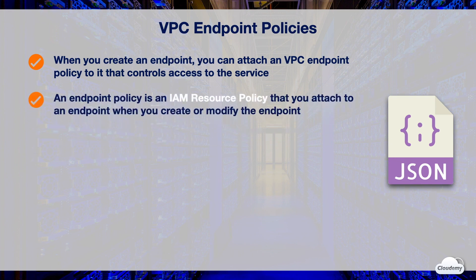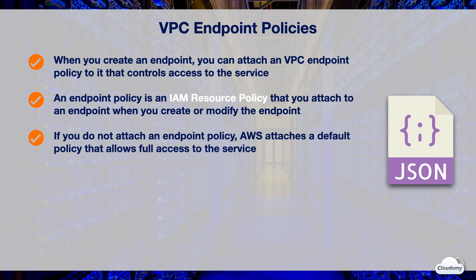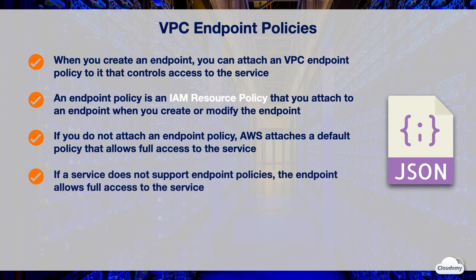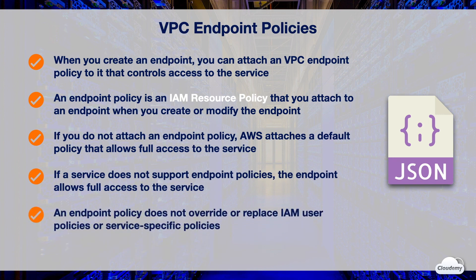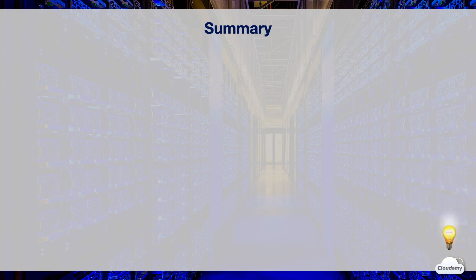A VPC endpoint policy is an IAM resource policy that you attach to an endpoint when you create or modify it. If you do not attach a policy when you create an endpoint, AWS attaches a default policy that allows full access to the service. An endpoint policy does not override or replace IAM user policies or service-specific policies such as S3 bucket policies — it is a separate policy for controlling access from the endpoint to the specified service. You cannot attach more than one policy to an endpoint, but you can modify the policy at any time, though it may take a few minutes for changes to take effect.